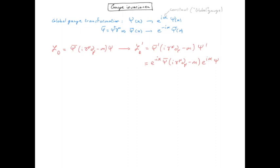Alpha being a constant, the covariant derivative has no effect on the exponential term, and therefore we can move it to the left and cancel it with exponential minus I alpha.